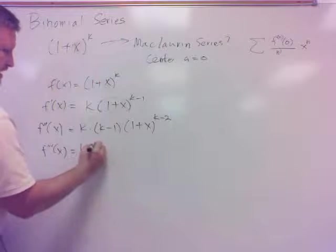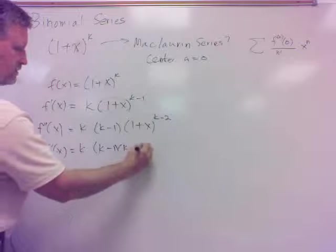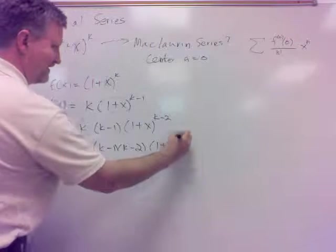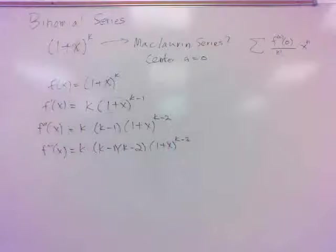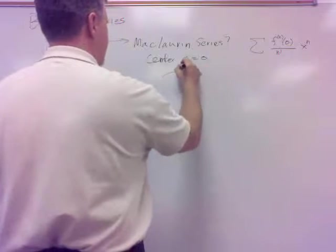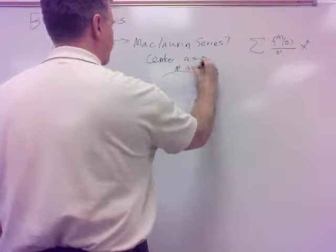So then the next one would be k, k minus 1. Bring down the power, it would be k minus 2. Then it would be (1+x), k minus 3. Well, Maclaurin series says do that at 0. a equals 0.